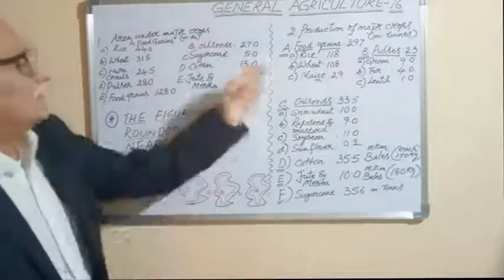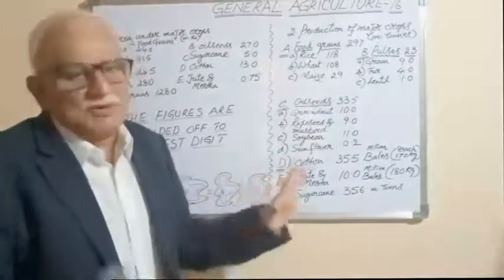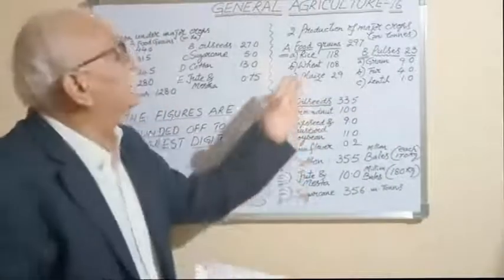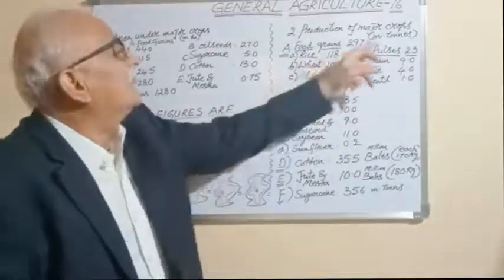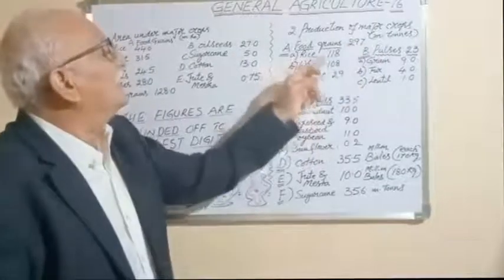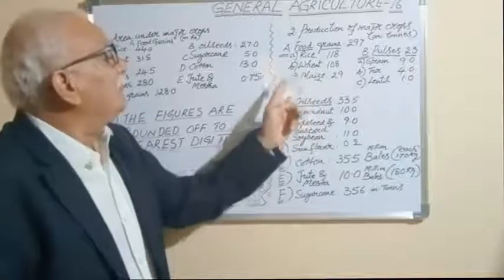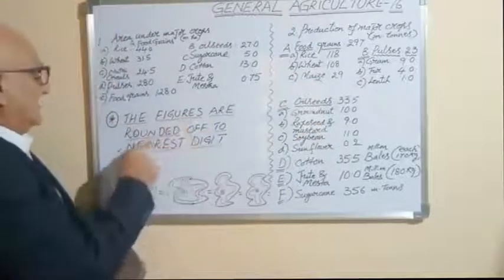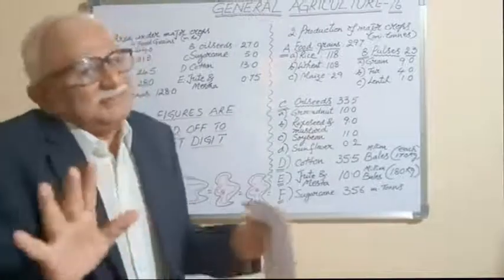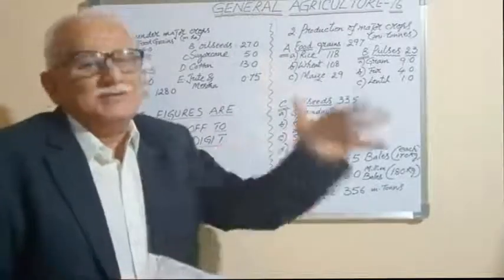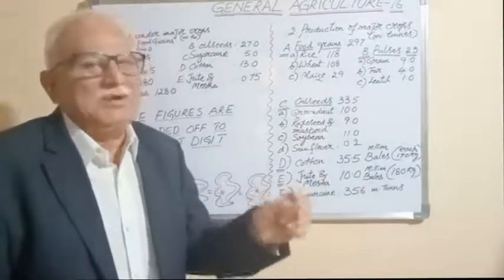Coming to the production of major crops — total food grains production is approximately 297 million tons. This includes rice, wheat, maize, and coarse cereals. Rice: 118 million tons. Wheat: 108 million tons. Maize: 29 million tons. Please note that the figures are rounded off to the nearest digit.